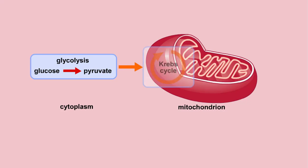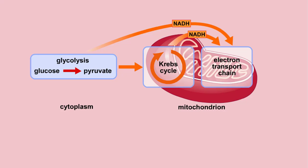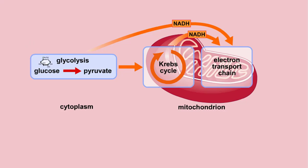The three stages are: 1. Glycolysis, 2. The Krebs cycle, and 3. The electron transport chain. Glucose enters this energy-yielding pathway of cellular respiration in the first stage, known as glycolysis. Glycolysis occurs in the cytoplasm, while the Krebs cycle and the electron transport chain reactions occur in the mitochondria.